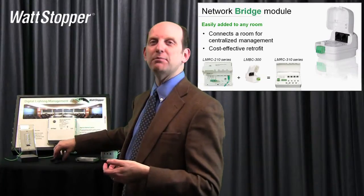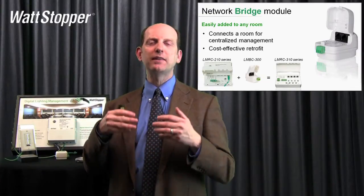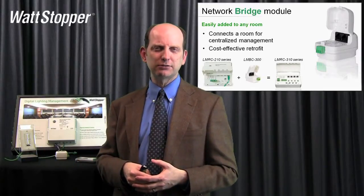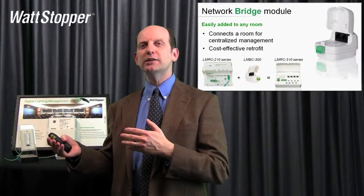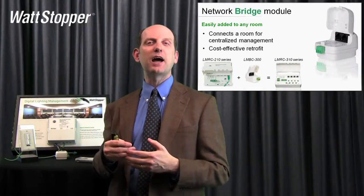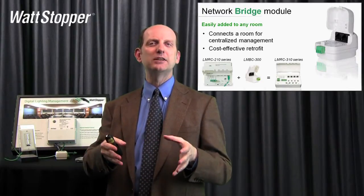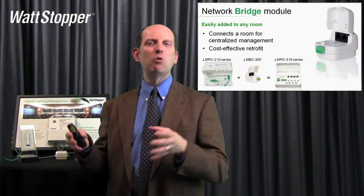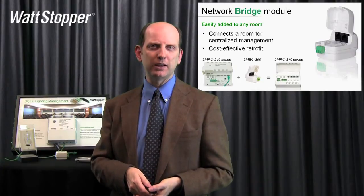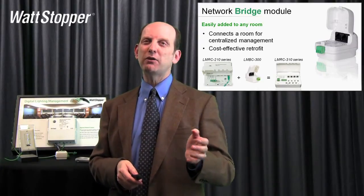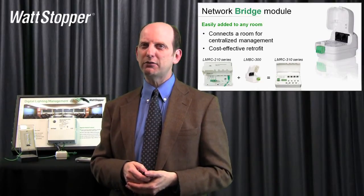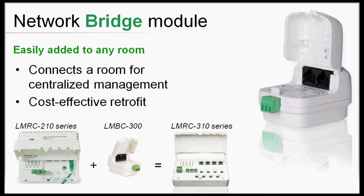Imagine how happy the end user is going to be if they say: we've just done this big lighting control retrofit, but I've been talking to some folks about the fact that I'm really missing the opportunity if I don't combine the lighting controls with my HVAC system. For a lot of times the answer would have been: if you didn't let us know about that originally, we're not going to be able to do much about it now. With DLM, you can always add that network bridge after the fact and now be able to talk BACnet over MSTP to anybody's system out there that understands that.